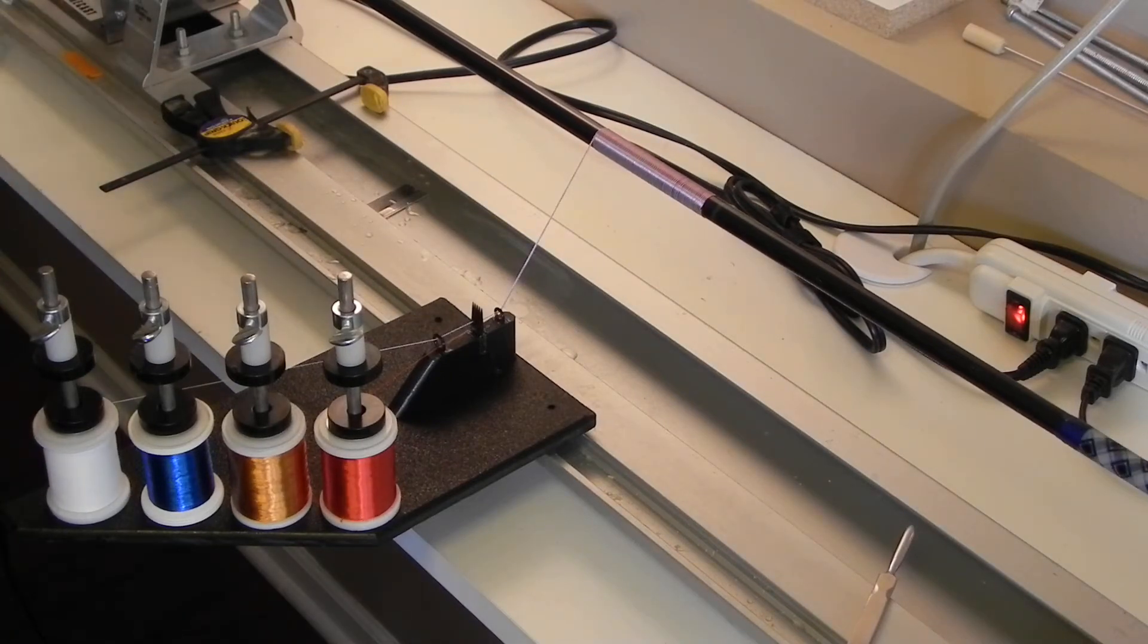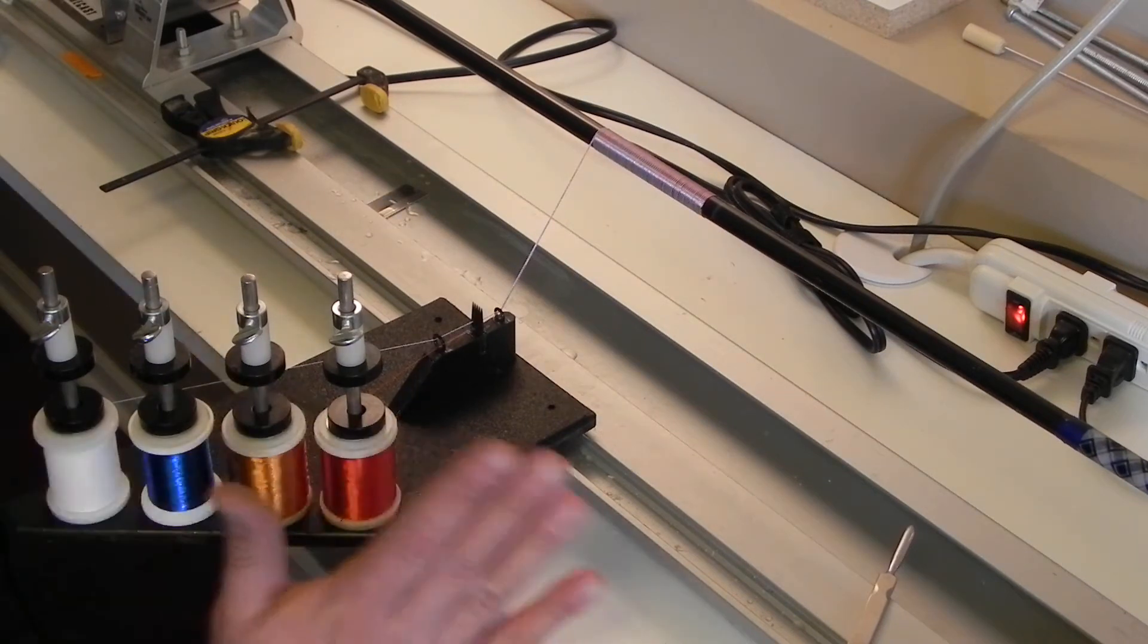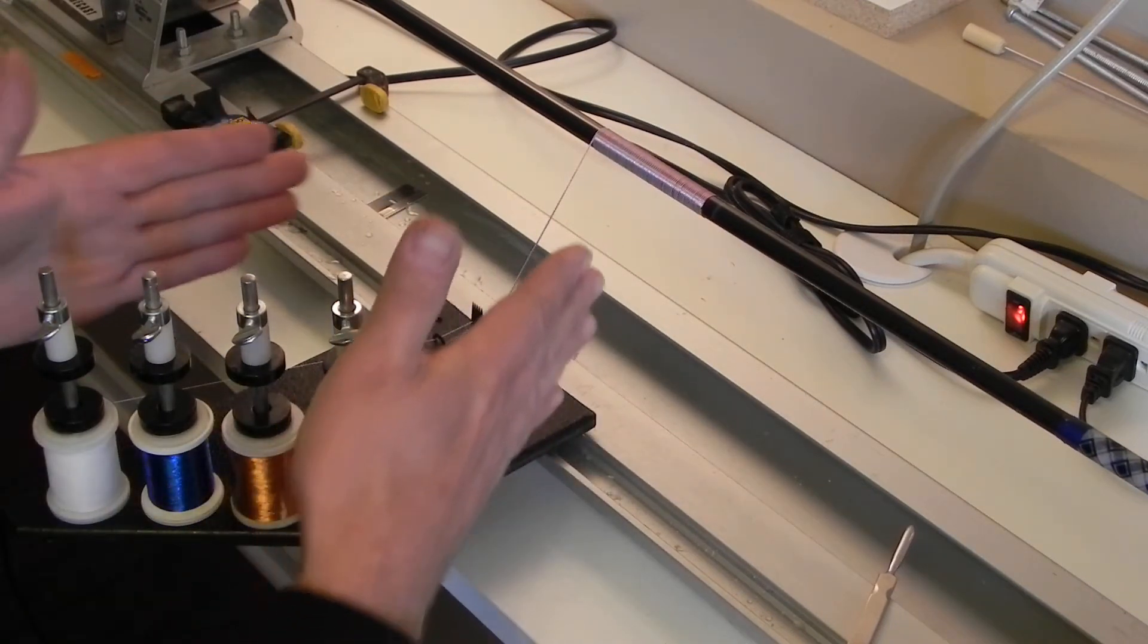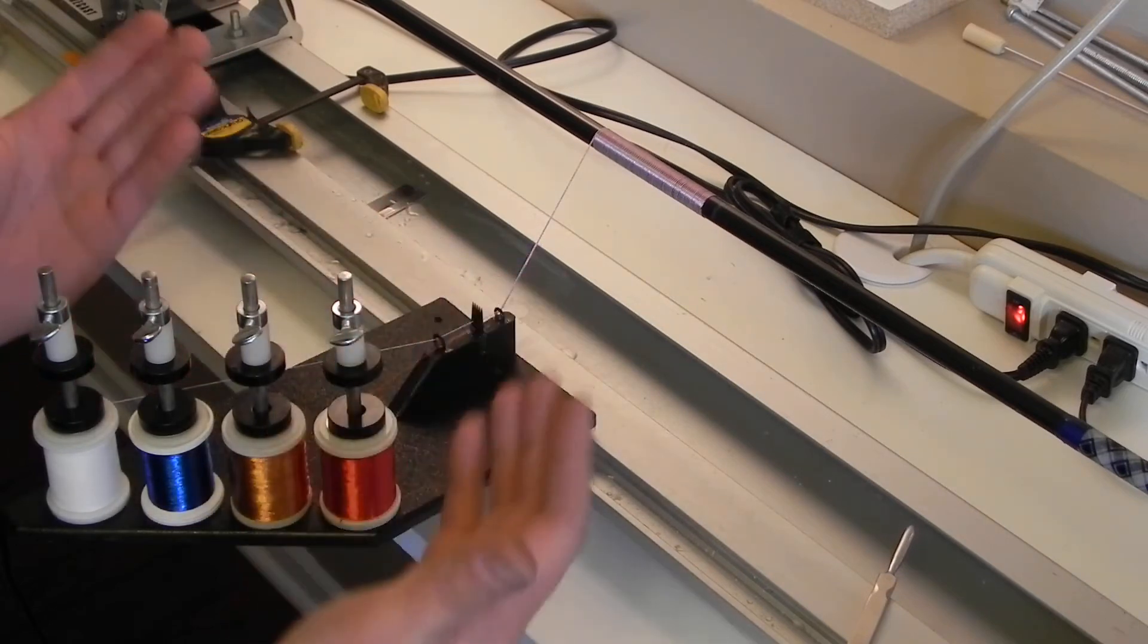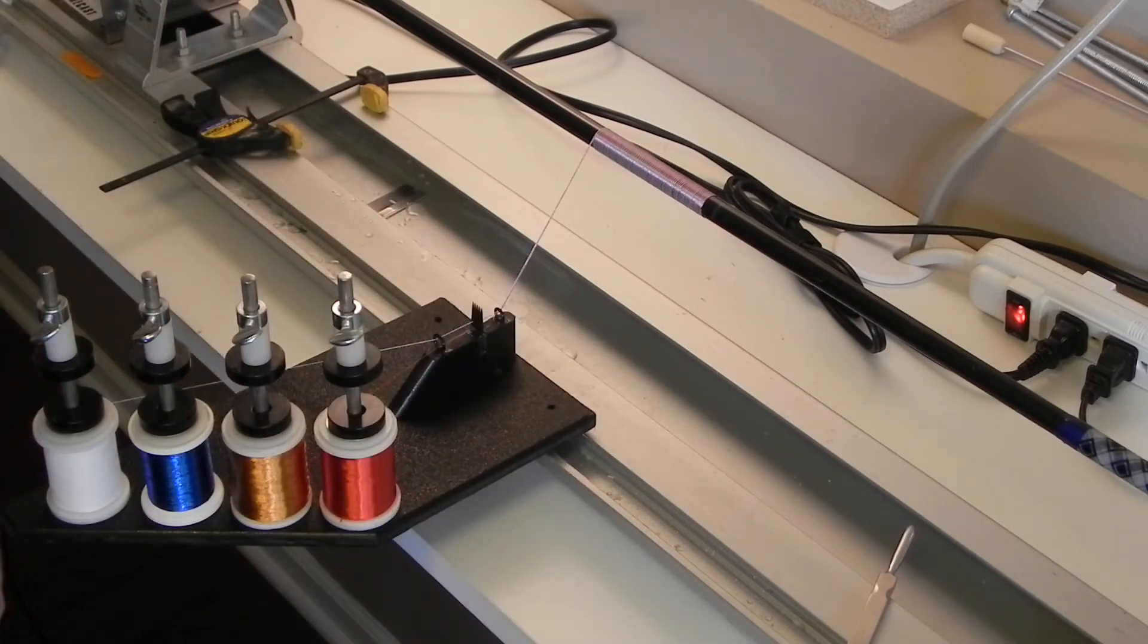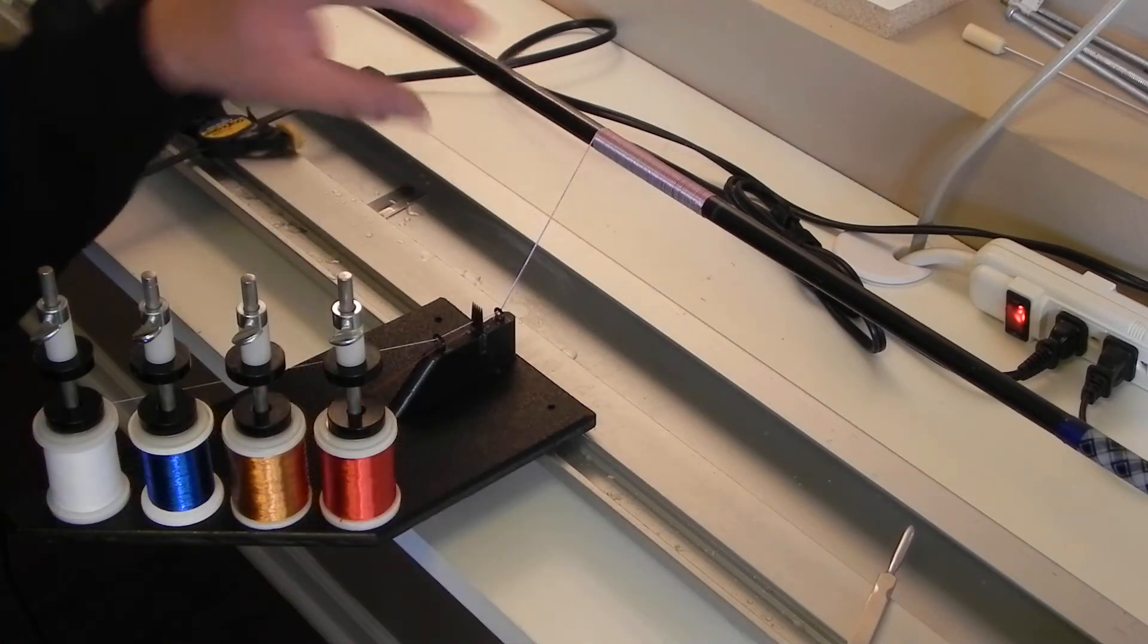One little improvement - I put this at an angle. What this does is it reduces the angle that the threads enter the first eye. It helps with keeping the tension equal throughout all the spools and making it more consistent.